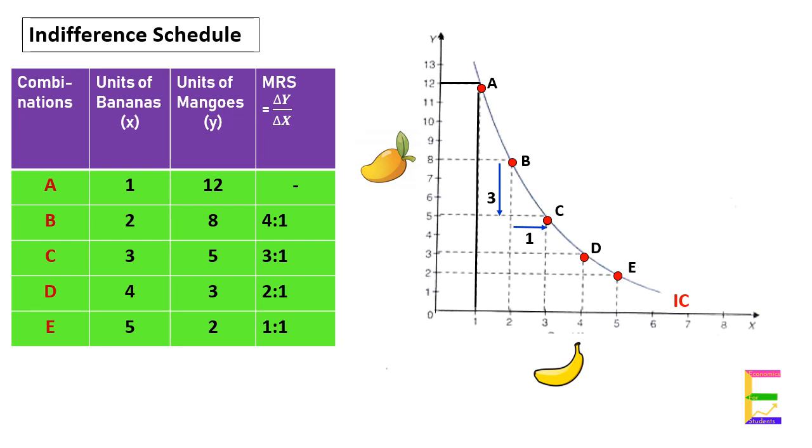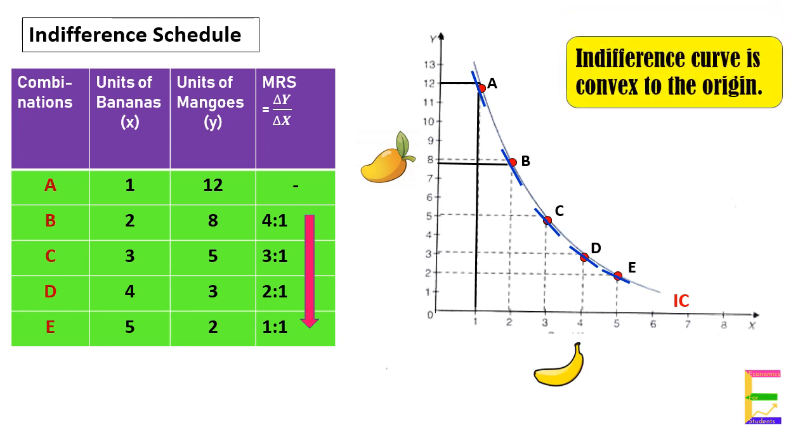Hence, his MRS will be equal to three. Therefore, as the consumer moves down along the indifference curve, his MRS decreases, and as a result, the slope of the indifference curve also decreases. So the indifference curve is convex to the origin.